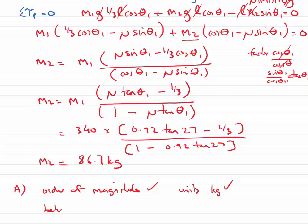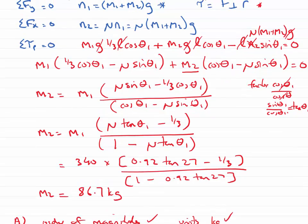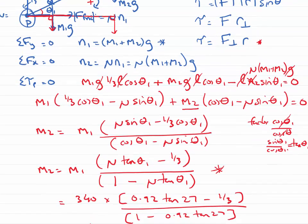More importantly is the behavior. Let's ask ourselves about that. If we look at this expression, if my coefficient of friction mu increases, then the numerator gets larger and the denominator gets smaller. So that means my mass can be bigger. That seems to make sense.